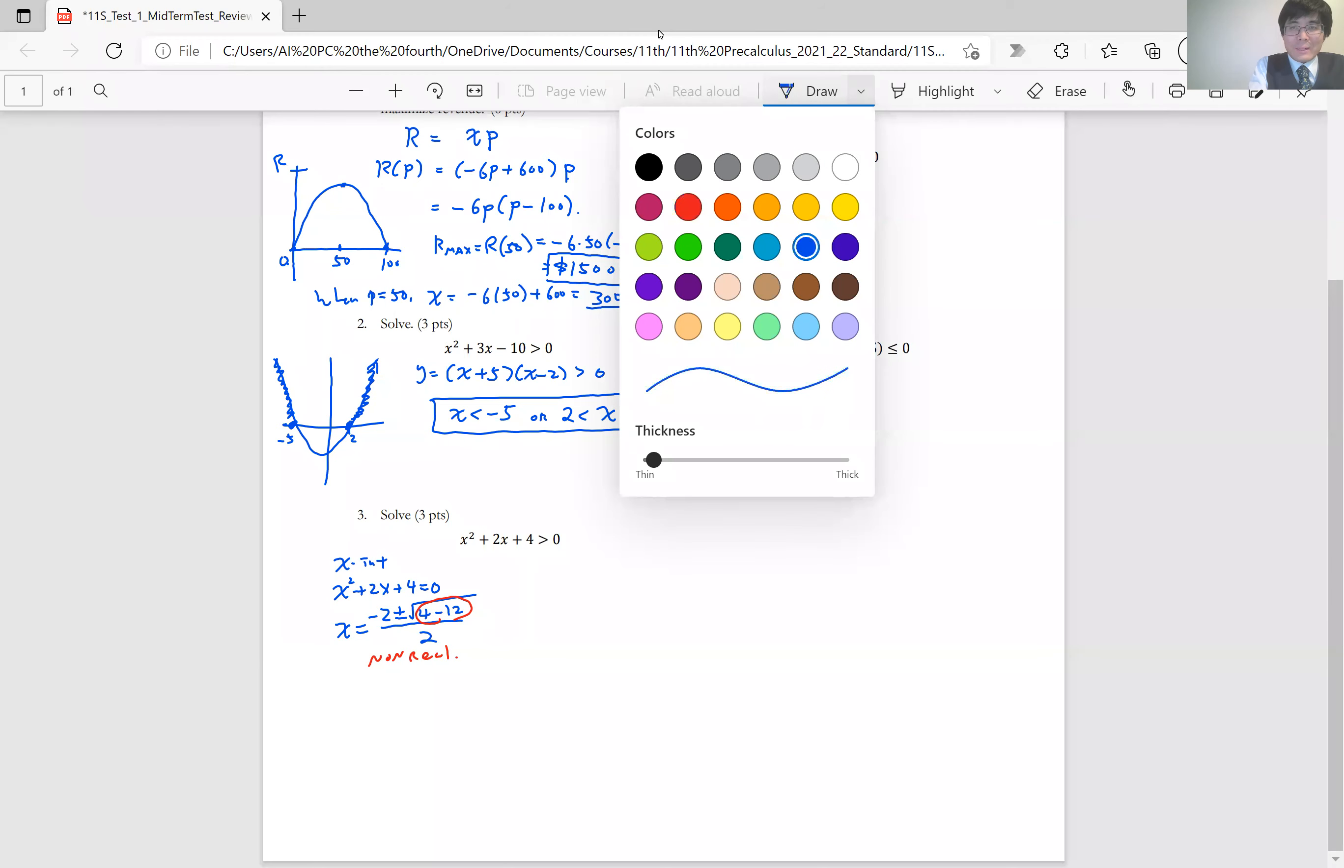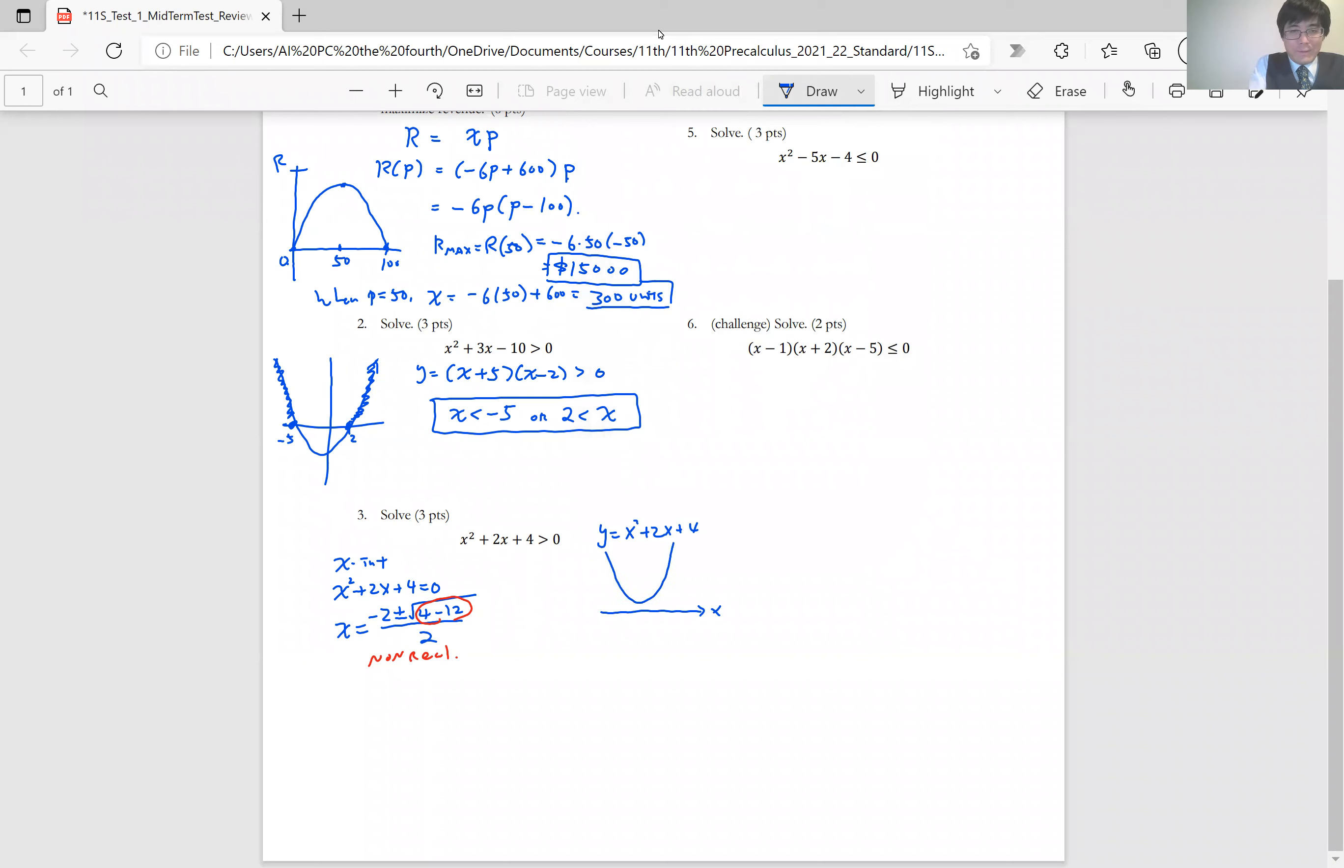What does it mean? It means there are no x-intercept visible. So if you graph y equals x squared plus 2x plus 4, it's going to be above the x-axis for all the time. So no x-intercept. So now if that's the case, for what value of x, the y-value is positive. In this case, y-value is greater than 0 everywhere. So this inequality is true for any x-value. So the answer is all real numbers.